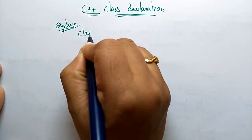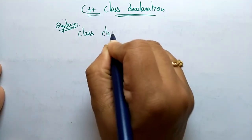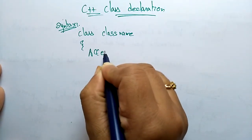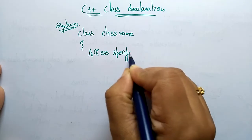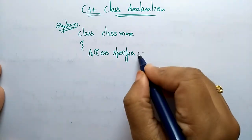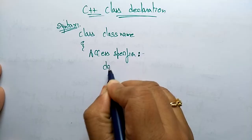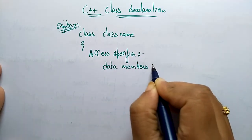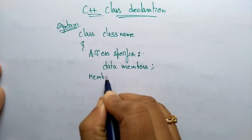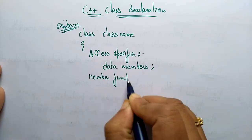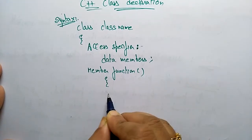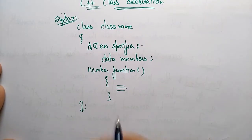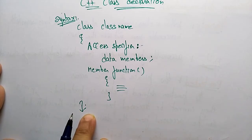So now let us see again the syntax of the class. The class has a class name, access specifier with a colon, data members, and then member functions. In the member function, you have to write the required code, whatever you want. And then you close the class with a semicolon.